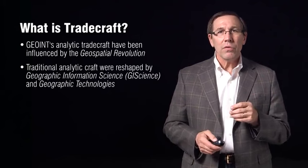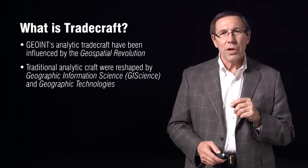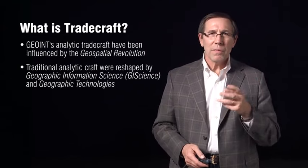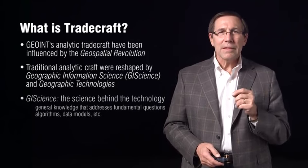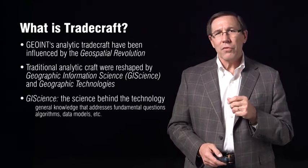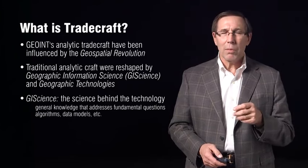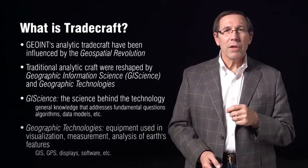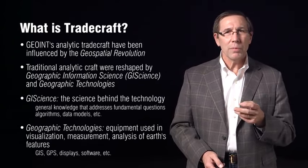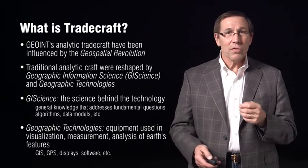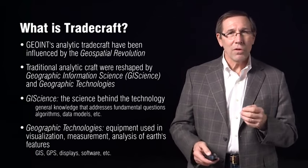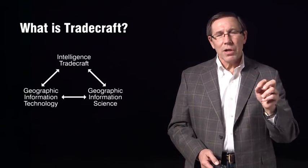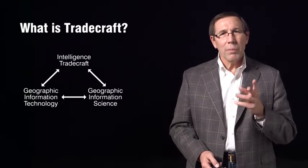Geospatial intelligence's traditional and analytic tradecraft were reshaped by the information sciences, GI science, and geographic technologies. GI science — Geographic Information Science — is the science behind the technology. It is general knowledge addressing fundamental questions: the algorithms, data models, and all the things that help us build geographic information systems and GPS. Geographic technologies are the pieces of equipment used in visualization, measurement, and analysis of earth features, including GIS, GPS, and the software that enable the analyst to do their job. This relationship between GI science, geographic technologies, and tradecraft might be displayed as a diagram.